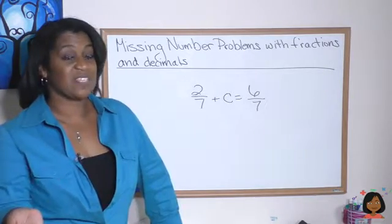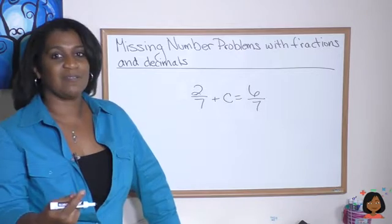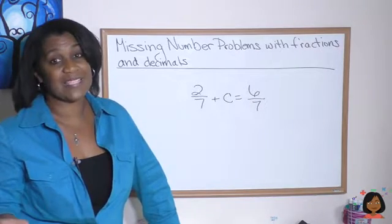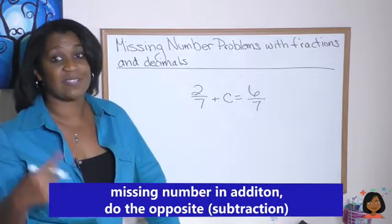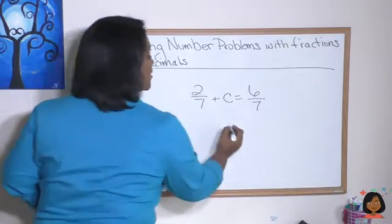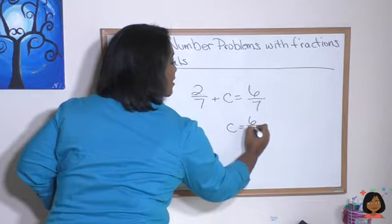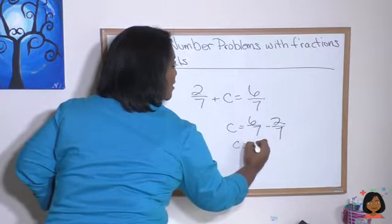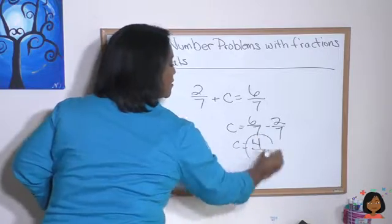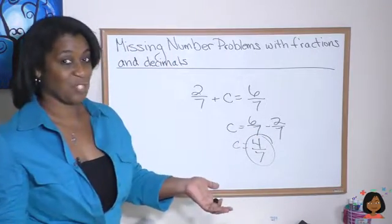Here's a missing number in addition, but we're using fractions this time. Let's apply the same rule. Missing number in addition, we do the opposite. Subtract to find the answer. C equals 6 7ths minus 2 7ths. So C is 4 7ths. Still works the same.